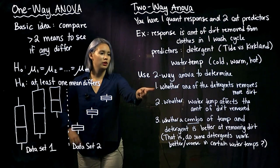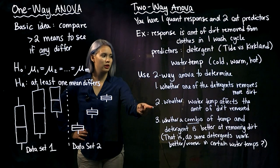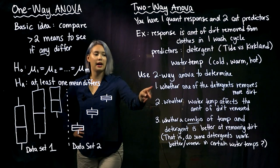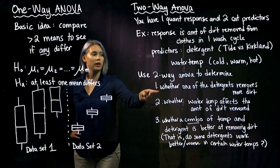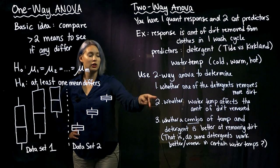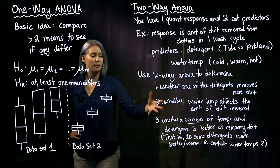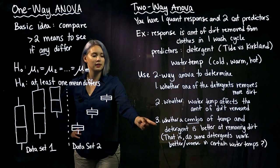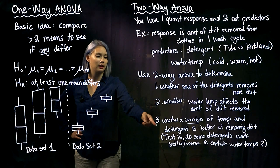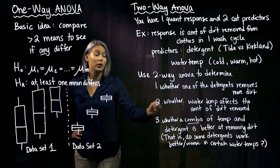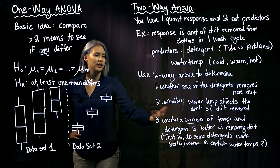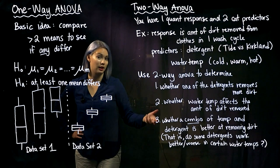You'll notice that questions one and two are things we could answer by doing a one-way ANOVA for each one. But the advantage of two-way ANOVA is this last question — we get to figure out whether some combination is working. In other words, we're trying to see if the interaction term is significant.